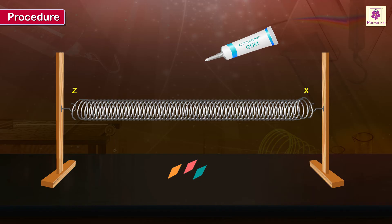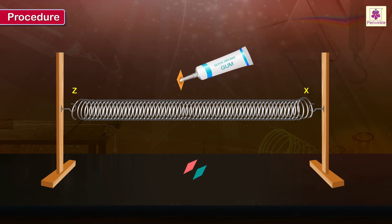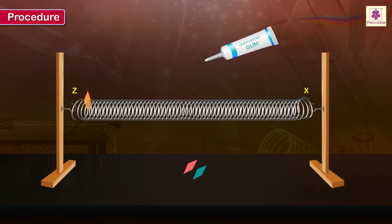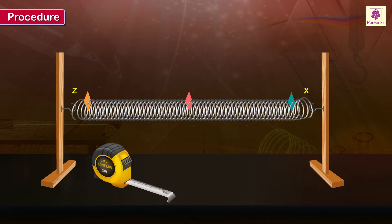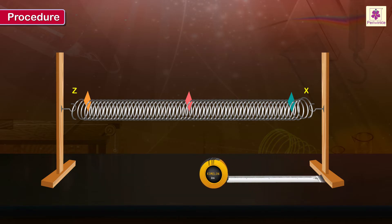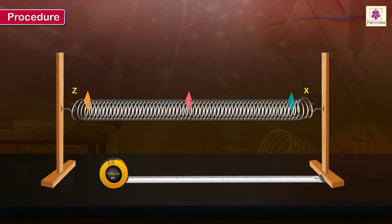Using quick dry adhesive or gum, stick them on a single turn of the coil of the slinky at 3 different places. Using a steel measure tape, carefully find and record the length L, i.e. the distance xz.